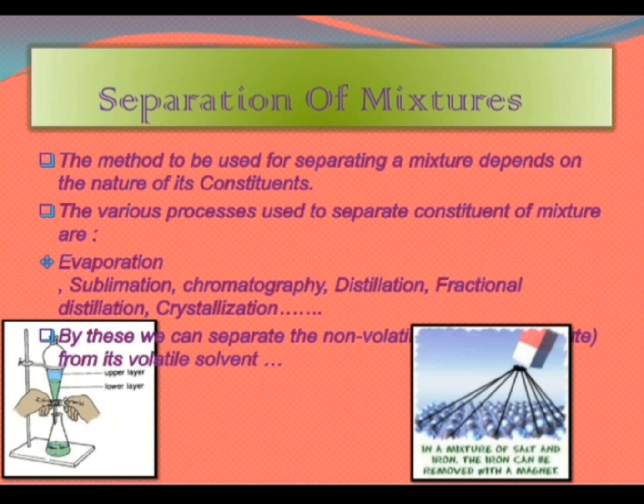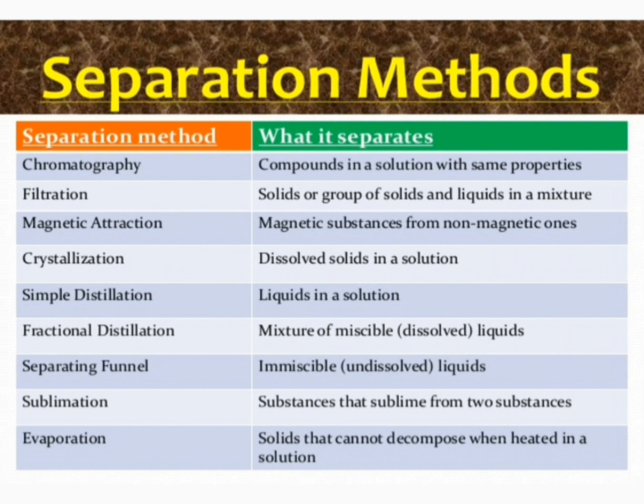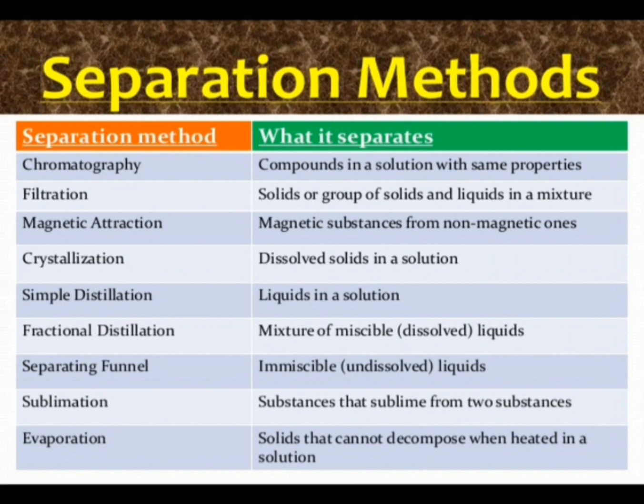Different mixtures are separated by using different physical processes. The common physical processes used to separate constituents of a mixture include: sublimation, magnet method, solvent method, filtration, centrifugation, evaporation, crystallization, chromatography, distillation, fractional distillation, and separating funnel.